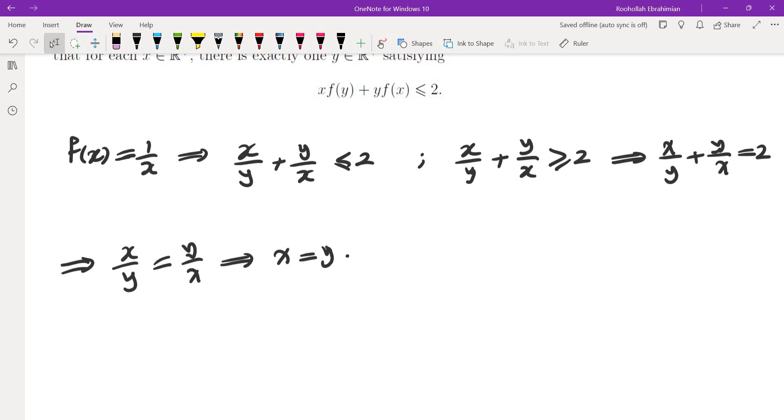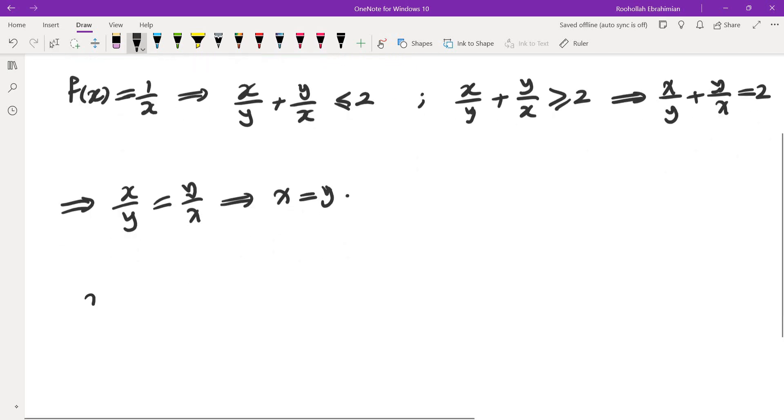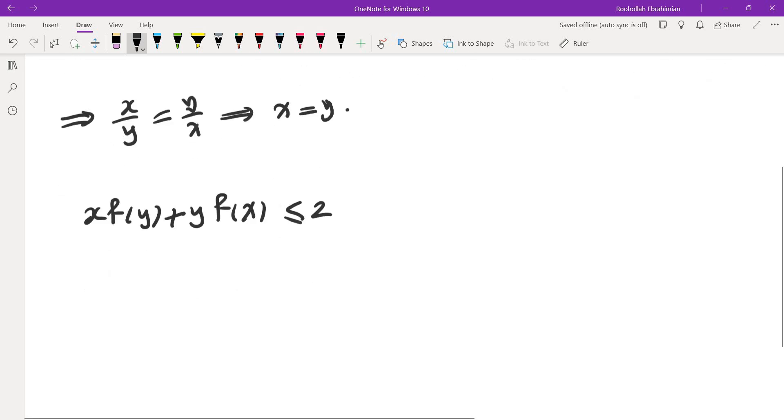What I did next was to look at the inequality that we had, xf(y) plus yf(x) less than or equal to 2. I'm going to call x and y twins of each other. So note that if xf(y) plus yf(x) is less than or equal to 2, then yf(x) plus xf(y) is also less than or equal to 2. So that means x and y are twins of each other.